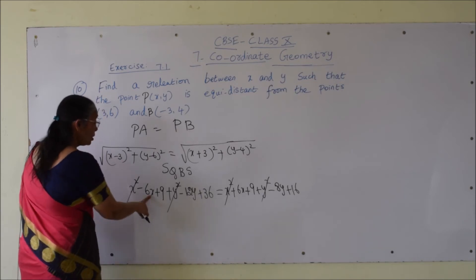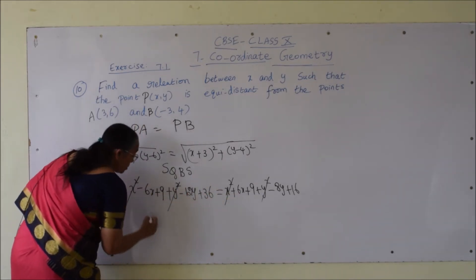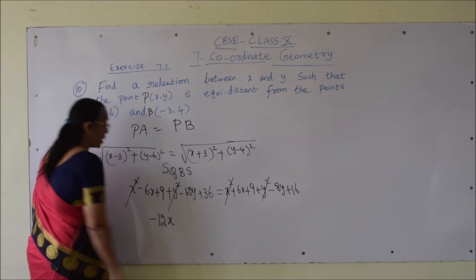Minus 6x, let me bring the 6x term here. So minus 6x minus 6x is minus 12x.